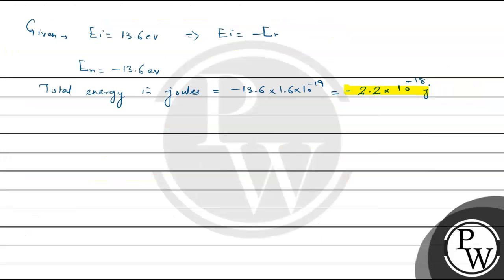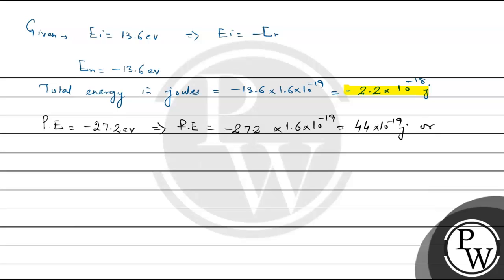We know the potential energy is -27.2 electron volt. Converting: -27.2 × 1.6×10⁻¹⁹ gives approximately -43.5×10⁻¹⁹ joules, which we can write as -4.4×10⁻¹⁸ joules. So potential energy is matched.